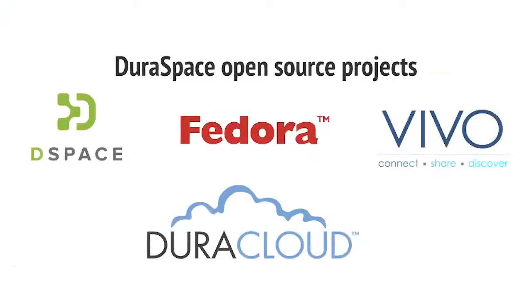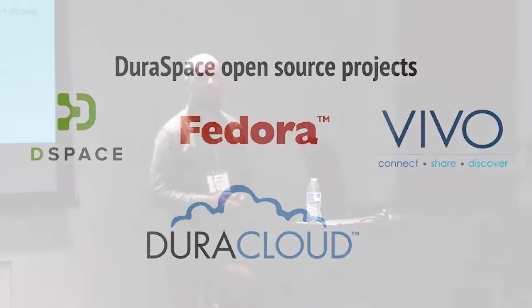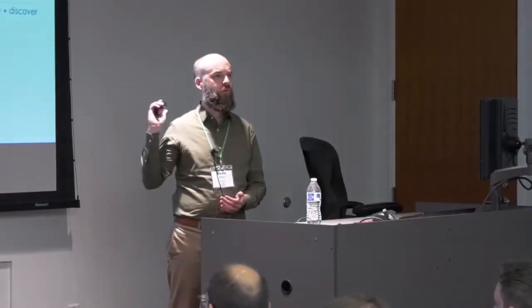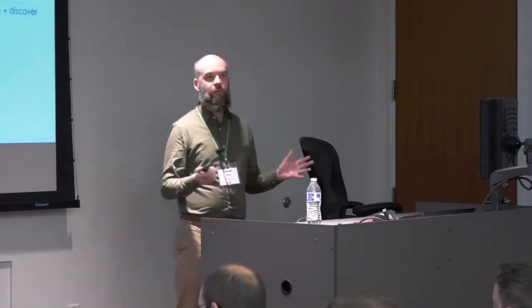I'm going to be talking about Fedora today. We do steward a few other applications — you're probably familiar with DSpace as institutional repository software. Vivo is a little bit different; it's not repository software, it's more focused around research information management, researcher profiles based around linked data and that sort of thing. DuraCloud we typically run as a service but it is also an open-source software application you can deploy locally, focused around cloud-based preservation services particularly with Amazon but also with others.